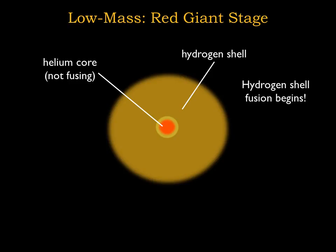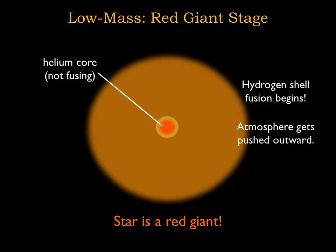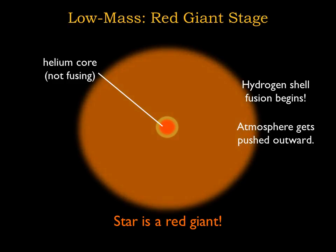The shell fusion proceeds at a much higher rate than the hydrogen core fusion did. This increase in energy output causes a buildup of thermal pressure inside the sun, which pushes its surface outward. The sun will become a huge red giant as seen from the outside, even while most of its mass remains buried deep inside its shrinking core.